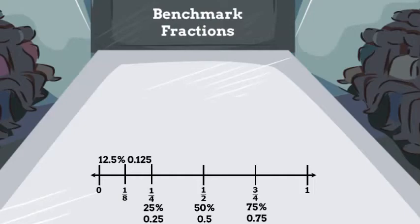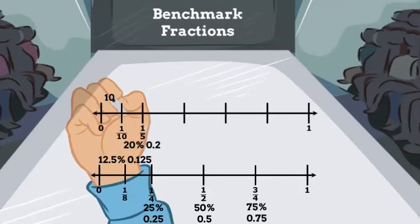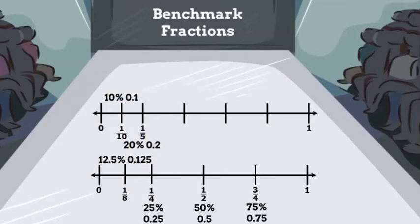20 nickels make a dollar, so one fifth is another good benchmark fraction. One fifth is 20 percent or 0.2. If I cut fifths in half, I get tenths. And remember, 10 dimes make a dollar, so one tenth is 10 percent or 0.1.